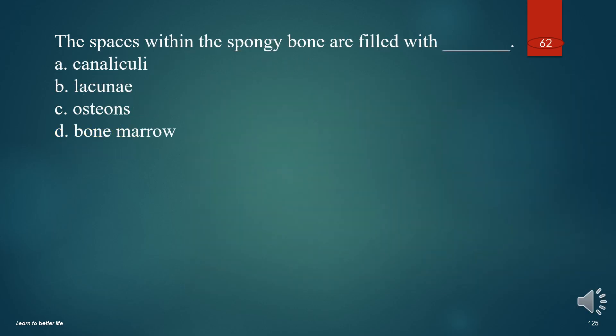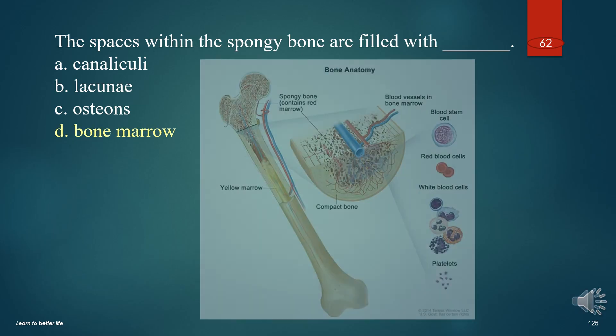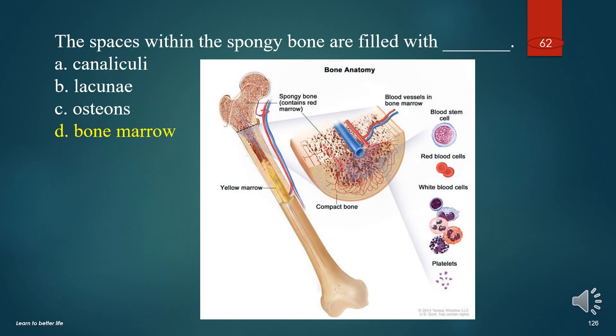The spaces within the spongy bone are filled with what? A. Canaliculi. B. Lacunae. C. Osteons. D. Bone marrow. The answer is D. Bone marrow.